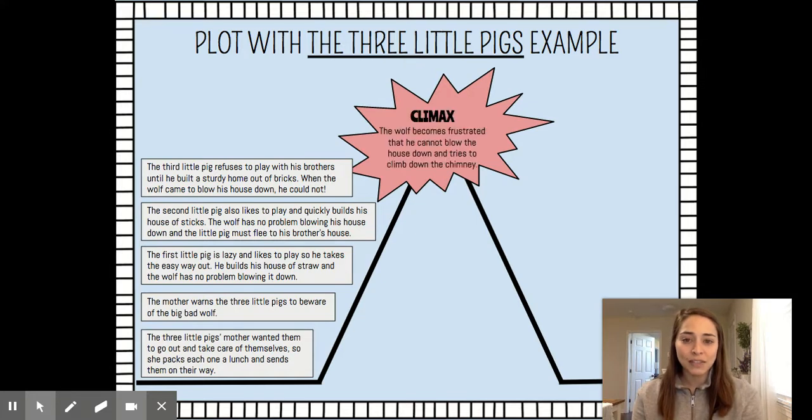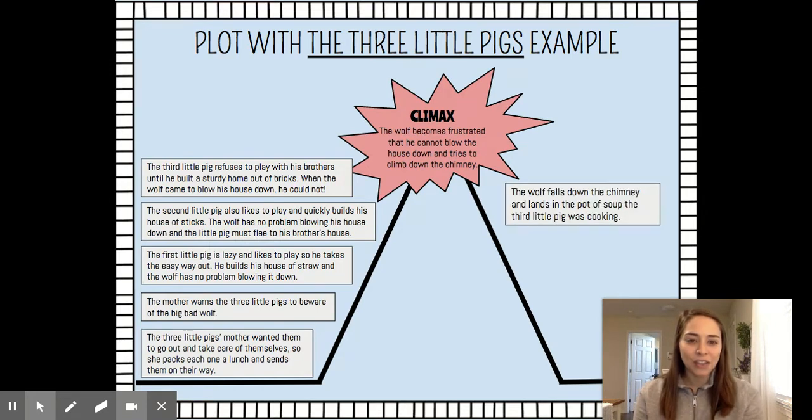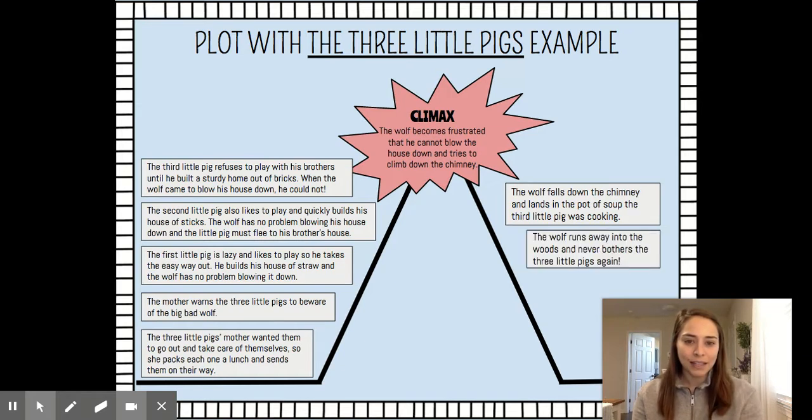So the climax of this story is the wolf becomes frustrated that he cannot blow the house down and tries to climb down the chimney. When he does that, the wolf falls down the chimney and lands in a pot of soup the third little pig was cooking. You would say that the wolf learned his lesson because he runs away into the woods and never bothers the three little pigs again.